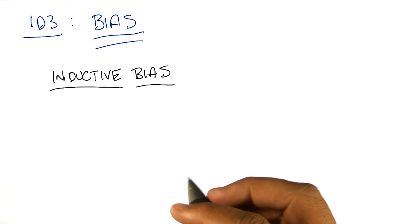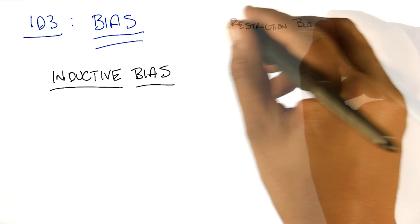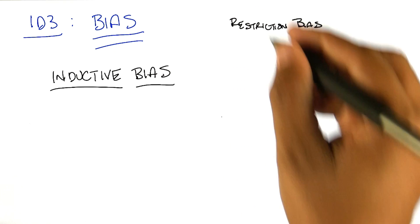Now, just as a quick refresher, I want to remind you that there's two kinds of biases that we worry about when we think about algorithms that are searching through space. One is what's called a restriction bias, and the other is called preference bias.